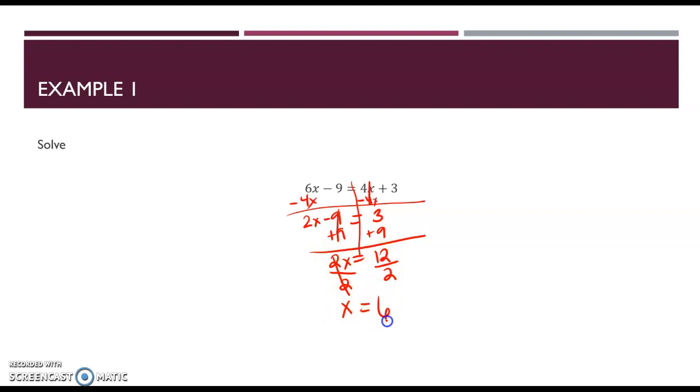And our answer is 6. And if I'm not sure, then I can plug it in. So 6 times 6 minus 9 should equal 4 times 6 plus 3. And so 6 times 6 is 36 minus 9. And 4 times 6 is 24 plus 3. 36 minus 9 is 27. And 24 plus 3 is 27. And so we ended up with the same thing on both sides of the equal sign.